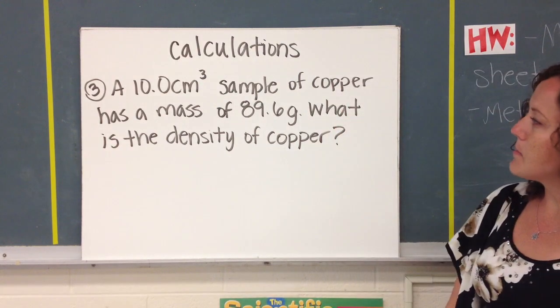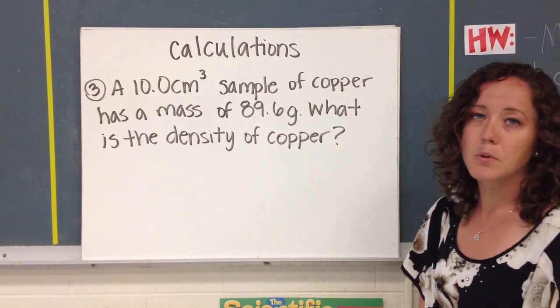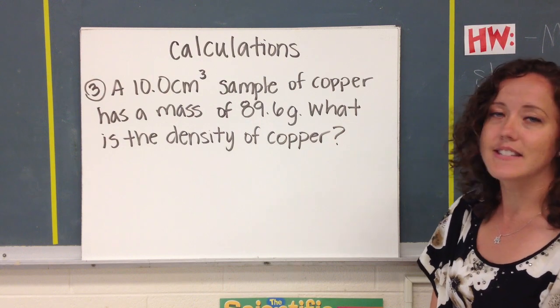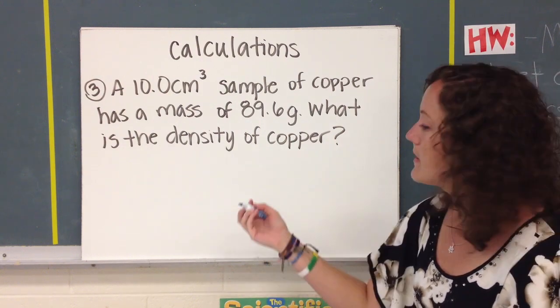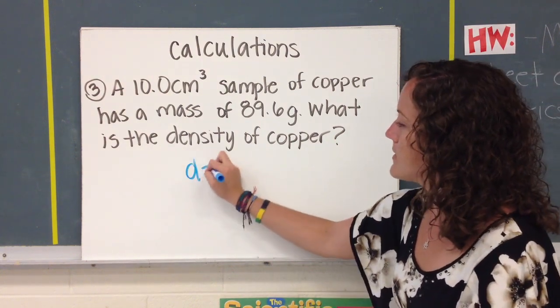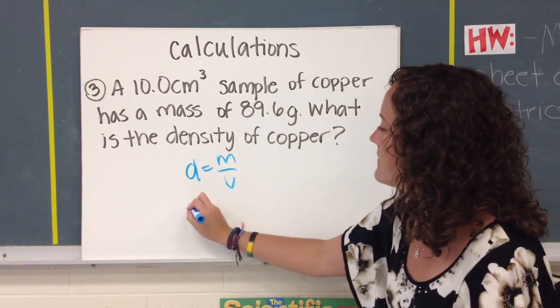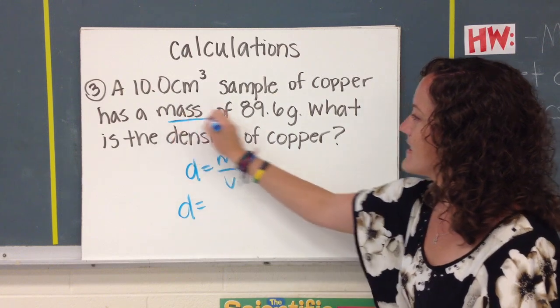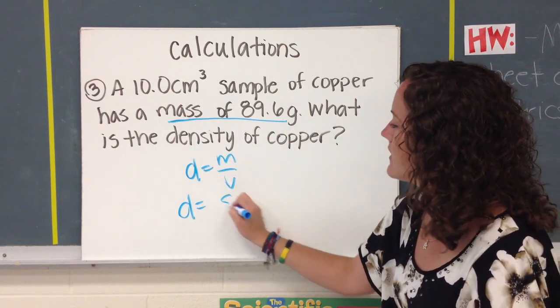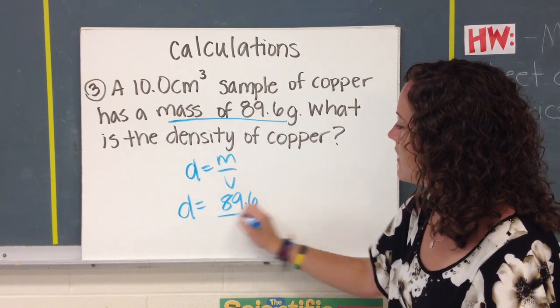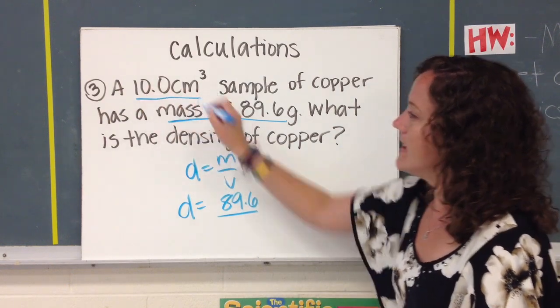A 10 centimeter cubed sample of copper has a mass of 89.6 grams. What is the density of copper? So again, we're just going to write our formula first. Always write the formula to start out so I know where you're beginning and I can see your thought process. Our mass is 89.6, and our volume is 10.